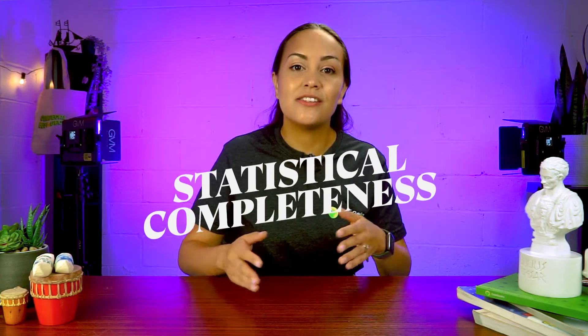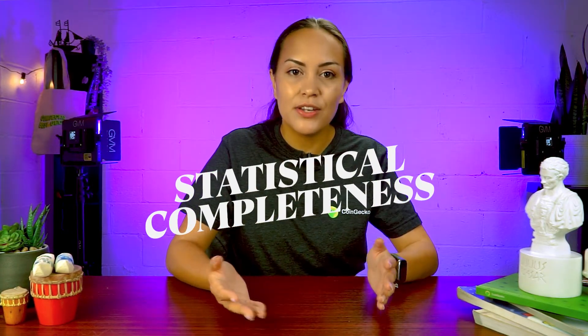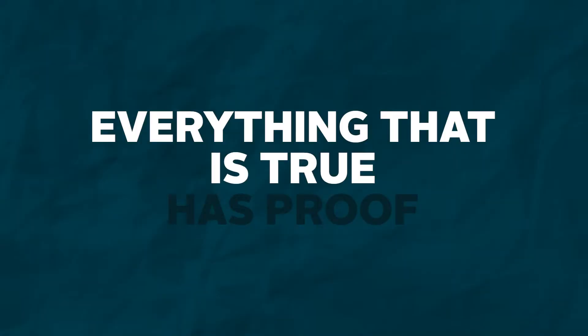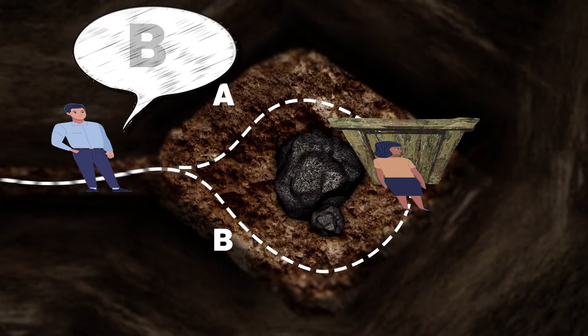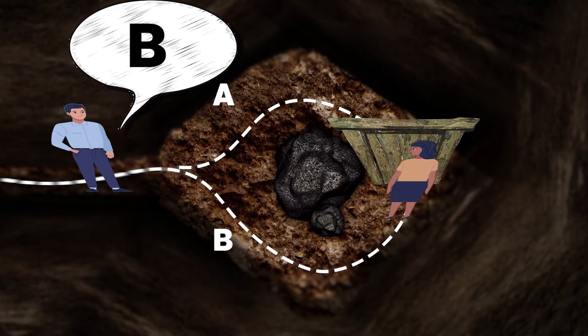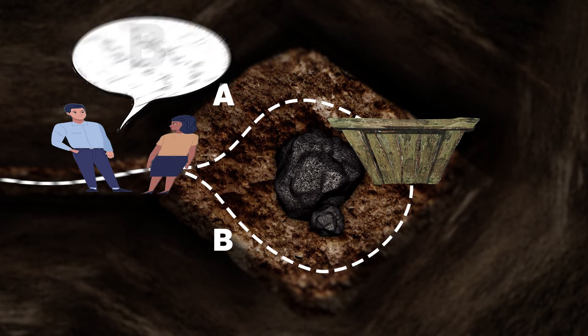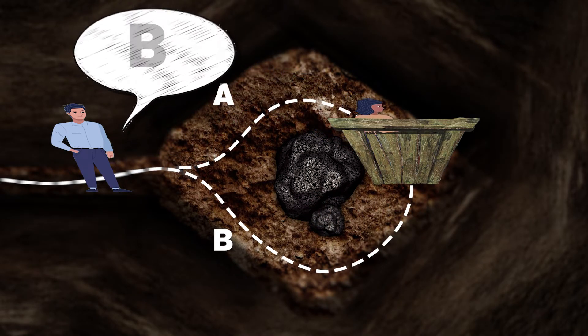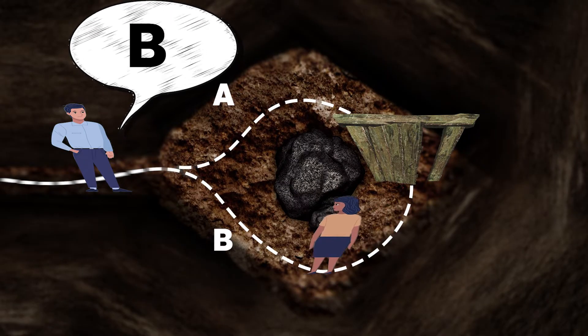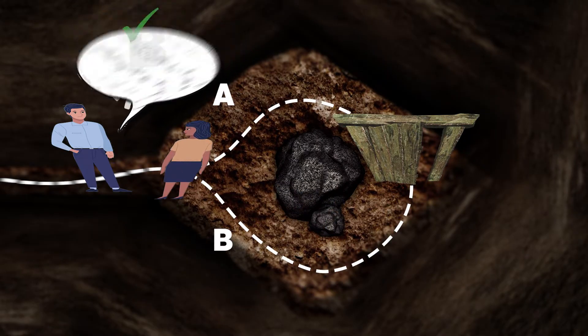The second criterion is statistical completeness, which implies that if the information provided by the prover is true, then a zero-knowledge proof method must enable the verifier to verify that the prover is telling the truth. Simply put, everything that is true has proof. In our illustration, this would mean that as long as you come out through the path that Jerry indicates every time, then it's very highly likely that you have the code.